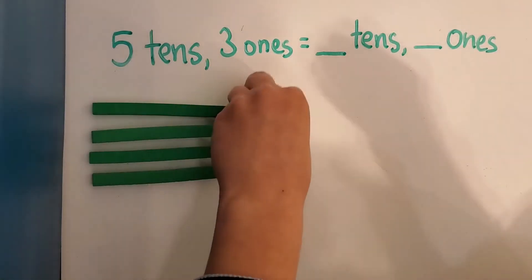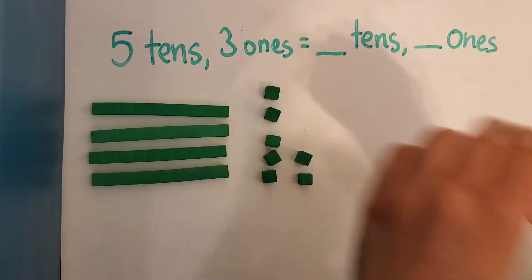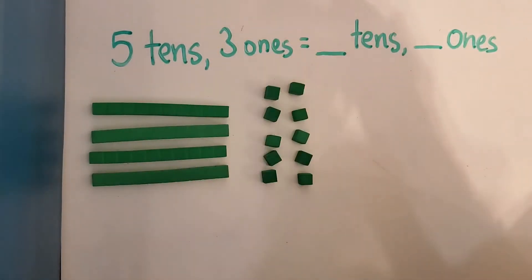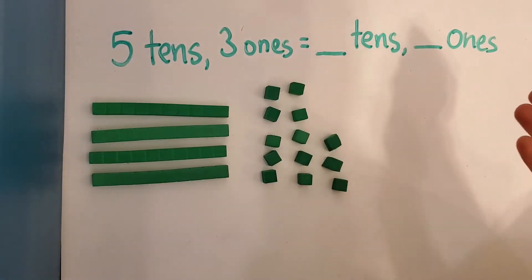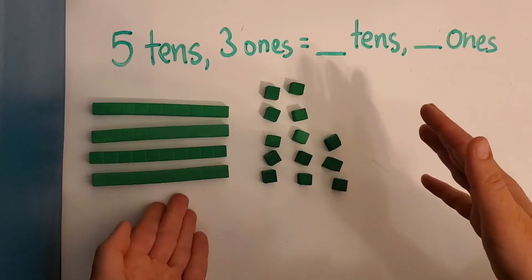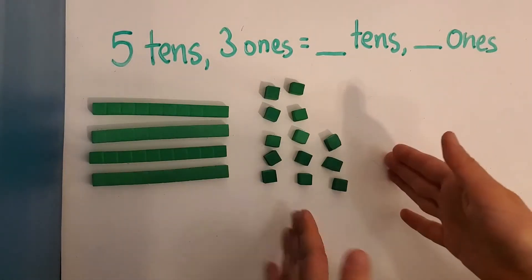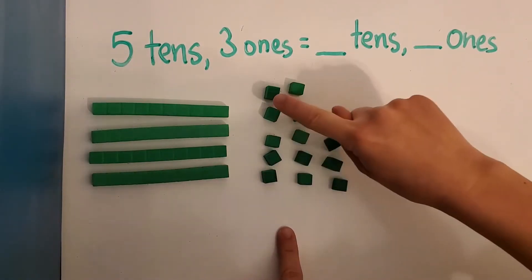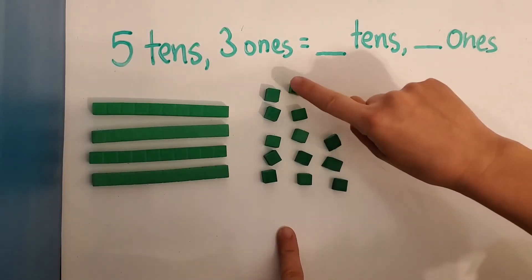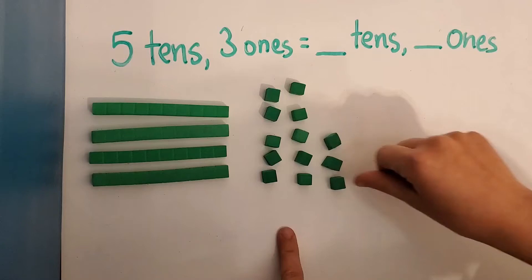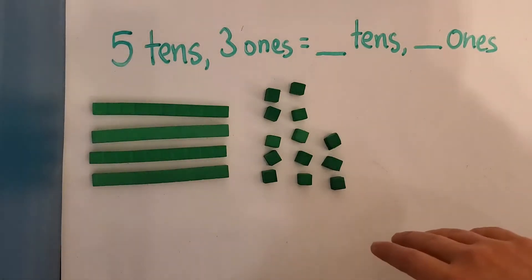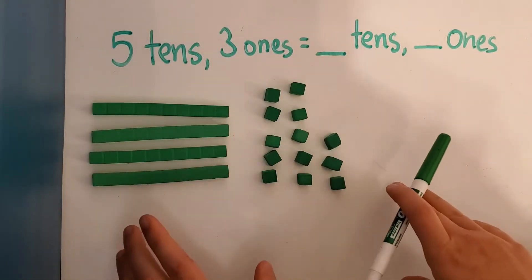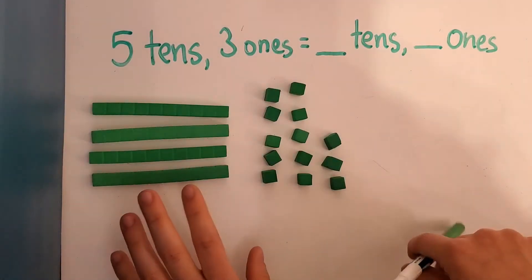So we're going to add these ones over here with the three ones. So now how many tens do we have? Now we have four tens, right? And how many ones do we have? Now we have thirteen ones. We'll count and just make sure: one, two, three, four, five, six, seven, eight, nine, ten, eleven, twelve, thirteen. Perfect. So we just regrouped a tens rod to show that one ten equals ten ones.